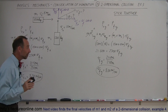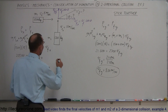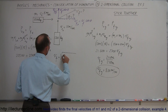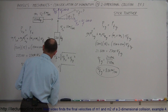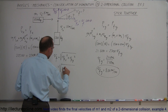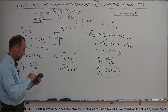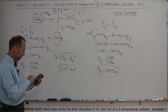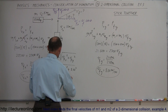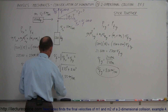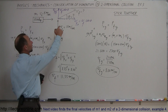Now we have the x and y components of the final velocity. To find the total final velocity, we use the Pythagorean theorem: v_final equals the square root of v_final_x squared plus v_final_y squared. That's the square root of 8.33² plus 8.00², which gives us 11.55 m/s — the final velocity of the two cars moving together after the collision.